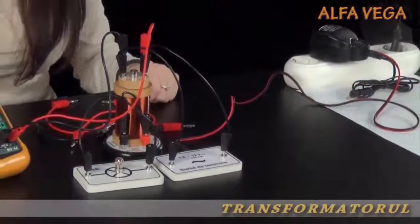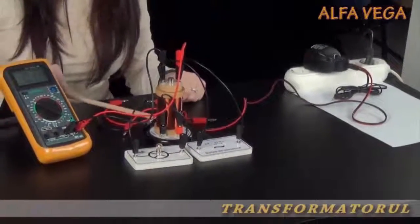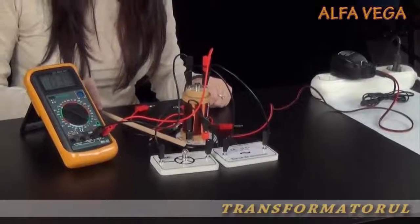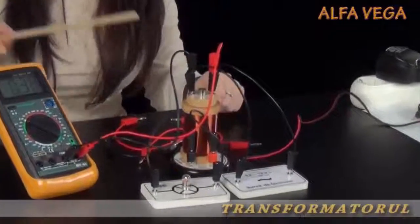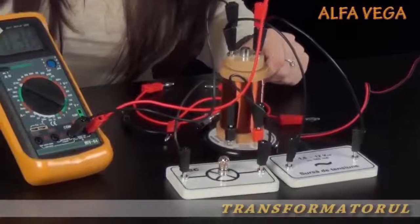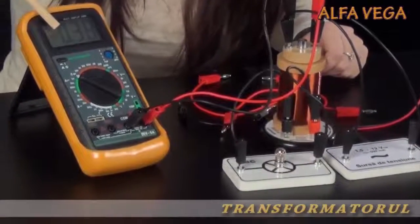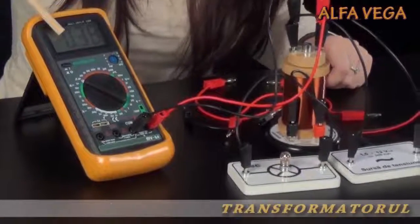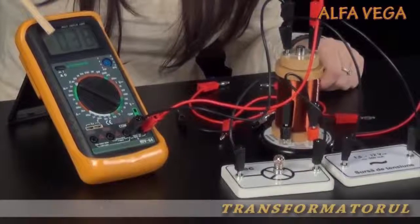Se observă funcționarea normală a becului și se notează indicațiile voltmetrului de la sursă: U = 0,38V. Se observă că becul funcționează normal.